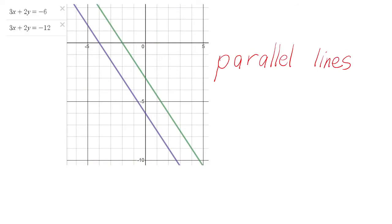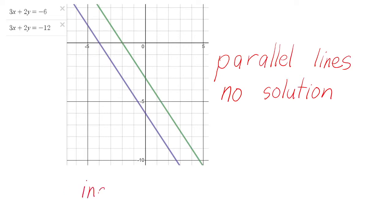Do parallel lines intersect? Is there a point of intersection in our graph? No. So meaning, is there a solution or does no solution exist? No solution at all. Why? Because there is no point of intersection.